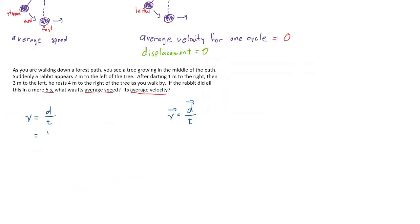Our distance was 12 meters, done in five seconds. Now do 12 divided by 5 on your calculator, which equals 2.4 meters per second.